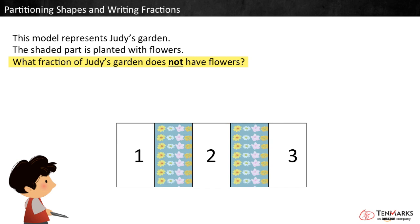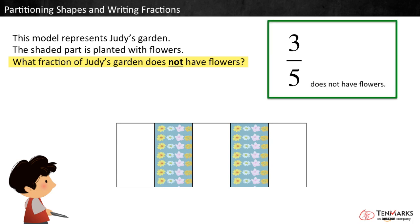The question asks for the fraction of the garden that does not have flowers. To find that fraction, we can write the total number of unshaded parts, 3, in the numerator, and the total number of equal parts, 5, in the denominator. This fraction is 3 fifths, so 3 fifths of Judy's garden does not have flowers. In this video, you have learned to identify shapes with equal parts, and to write fractions representing them.